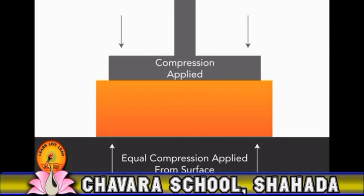From this diagram you can observe that if compression — means applied force — is applied from the top, then equal compression is applied from the surface also. That is why solids do not get compressed; they are only vibrating. This is about the solid state.